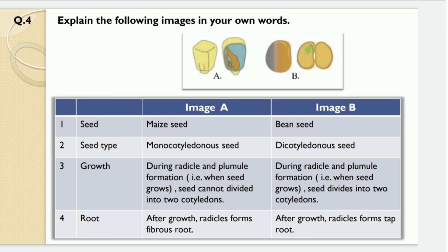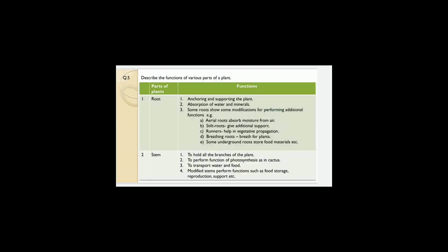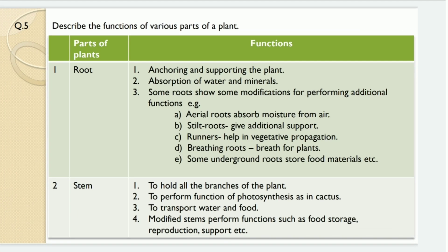In image A, when the seed grows during radicle and plumule formation, the seed does not divide into two cotyledons. In image A, after growth the radicle forms a fibrous root and in image B the radicle forms a tap root.